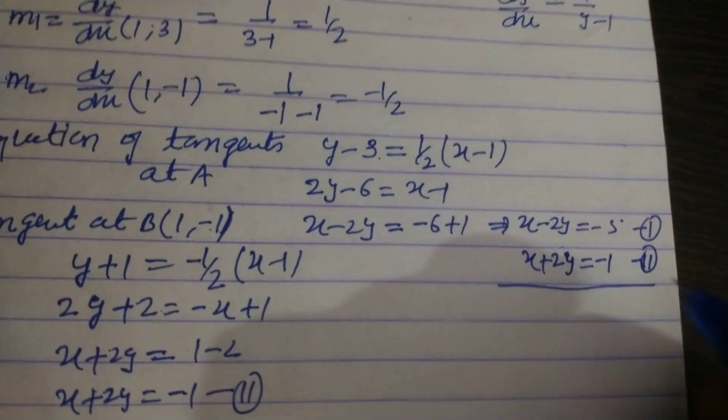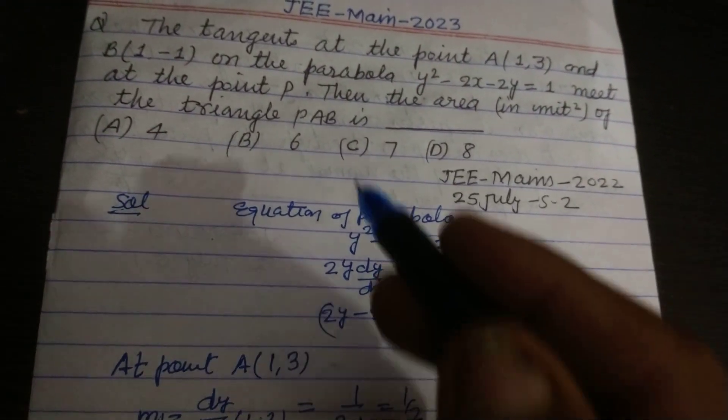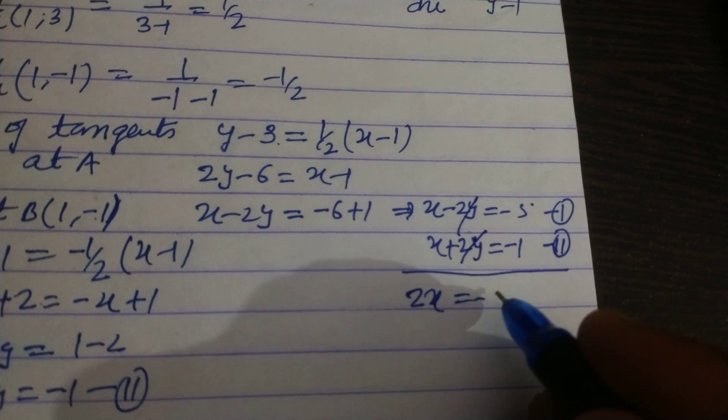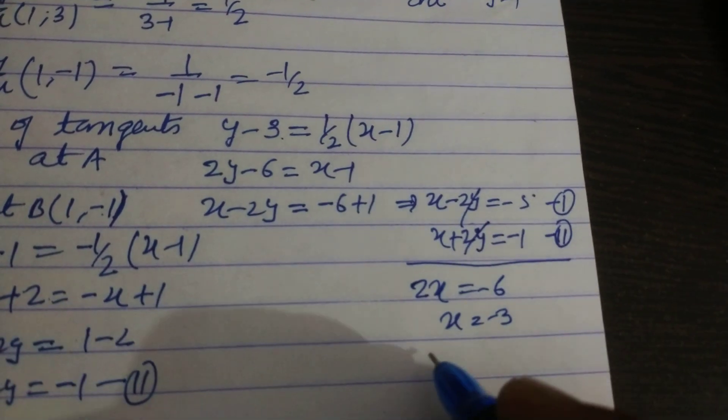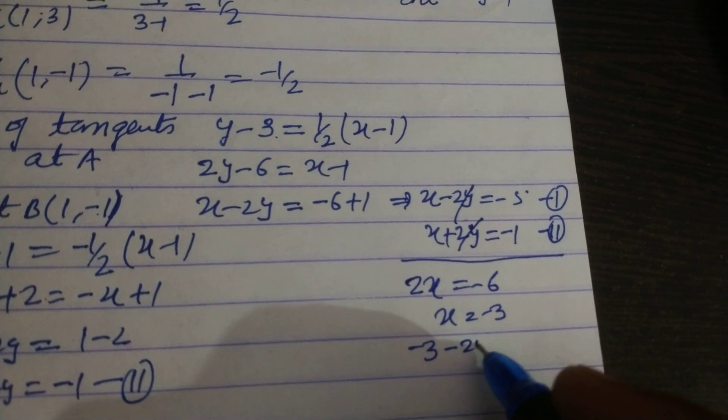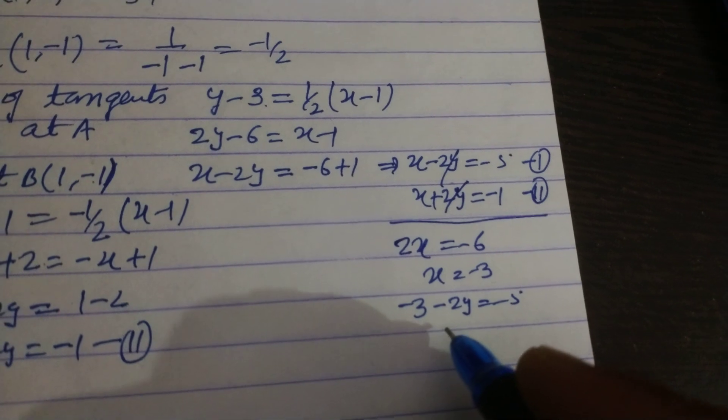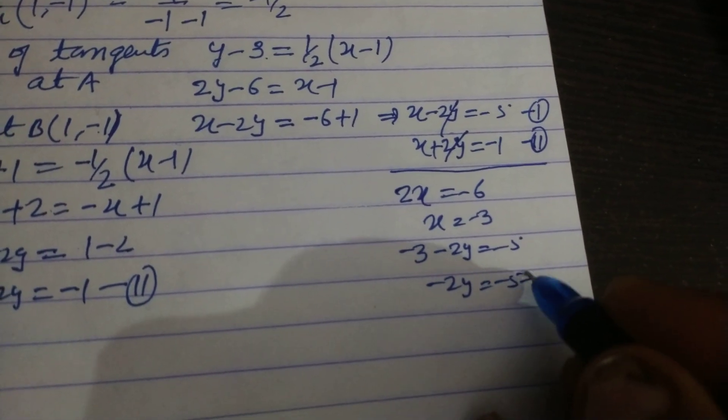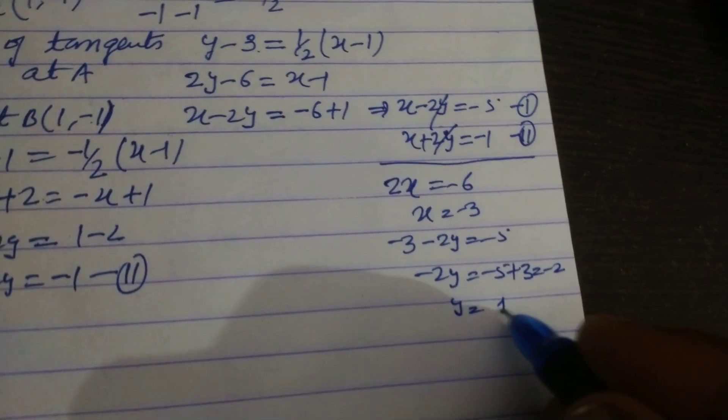Solving this, we can get the point of intersection, which is P, so adding this, we got 2x = -6, x = -3 and putting this in first, -3 - 2y = -5.